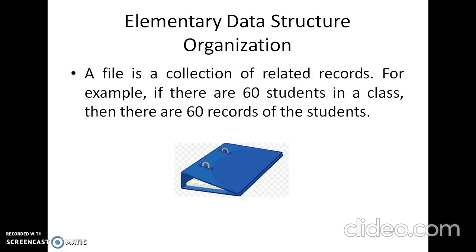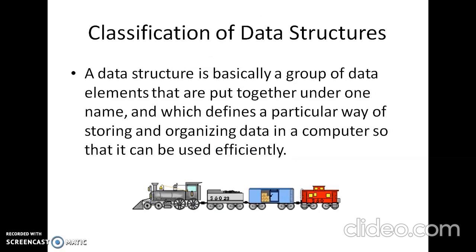The next one is a file. A file is a collection of related records. For example, if there are 60 students in a class, then there are 60 records of these students, and all these related records are stored in a file. Similarly, we can have a file of all the employees working in an organization, or a file of all the customers of a company, or a file of all the suppliers. A data structure is therefore basically a group of data elements put together under one name, which defines a particular way of storing and organizing data in a computer so that it can be used efficiently.